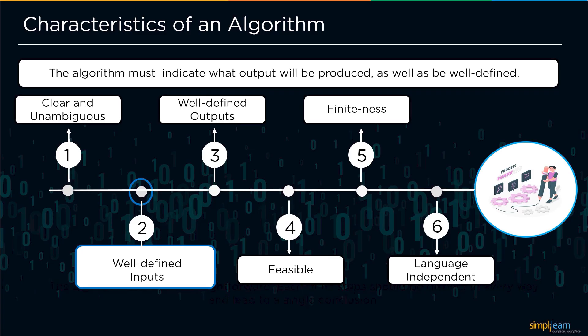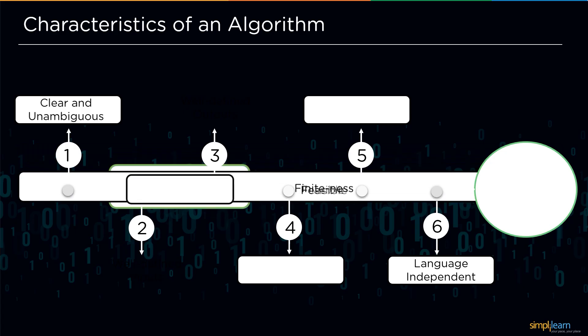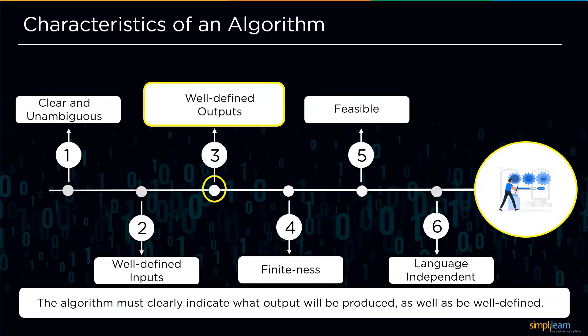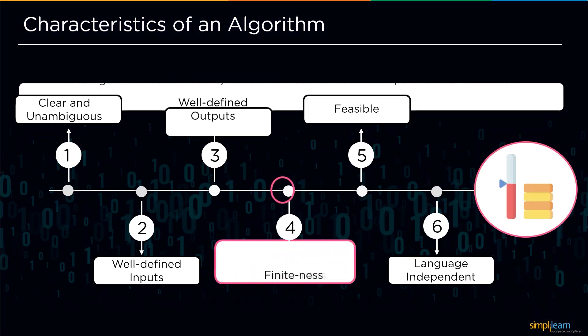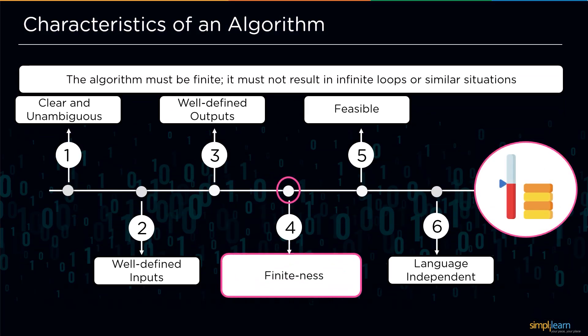The third one is well-defined outputs. This characteristic means that the algorithm must clearly indicate what output can be expected as well, and the output should also be well-defined. The fourth characteristic is the finiteness of algorithm. The finiteness says that the algorithm must be finite and it must not result in infinite loops or similar situations.